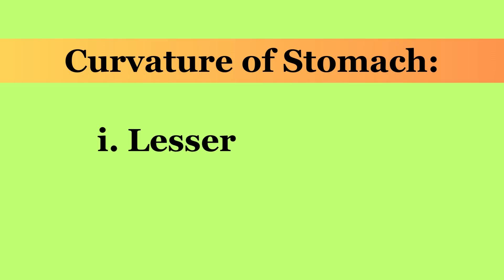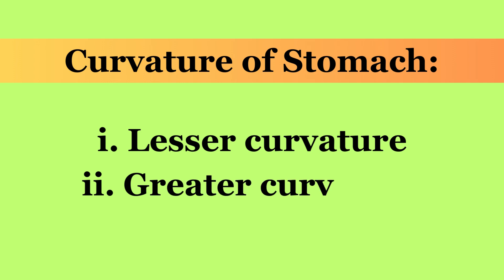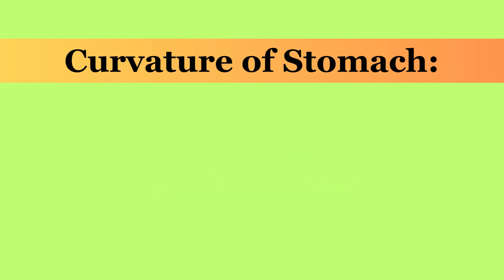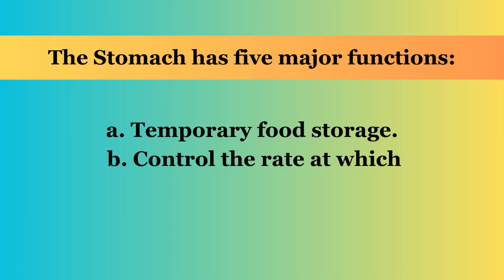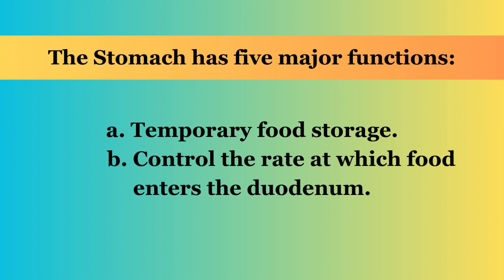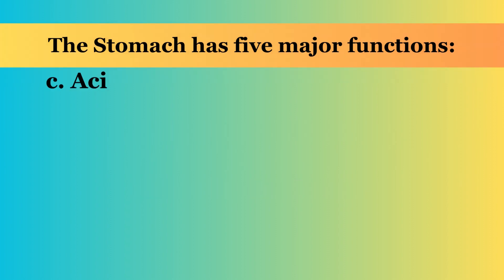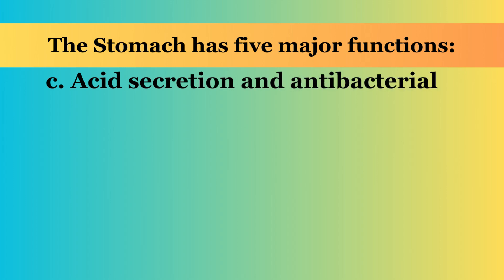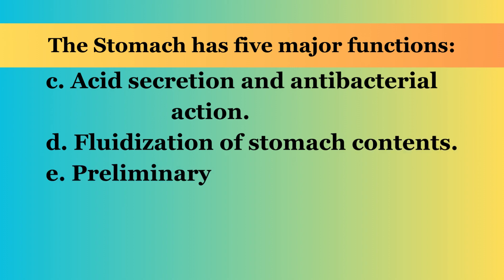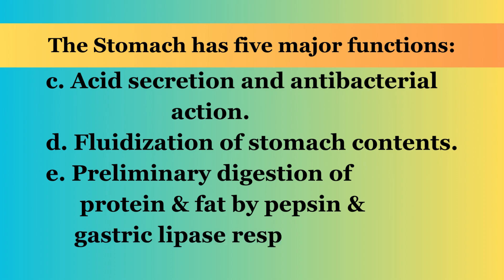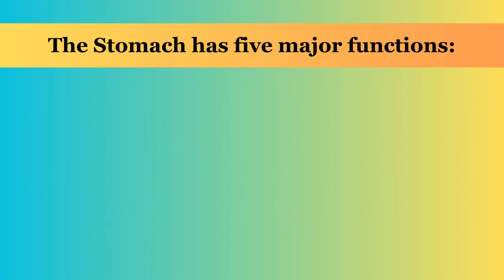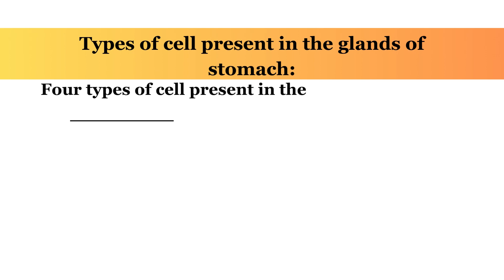Curvatures of the stomach: Lesser curvature and Greater curvature. The stomach has five major functions: a. Temporary food storage, b. Control the rate at which food enters the duodenum, c. Acid secretion and antibacterial action, d. Fluidization of stomach contents, e. Preliminary digestion of protein and fat by pepsin and gastric lipase respectively.